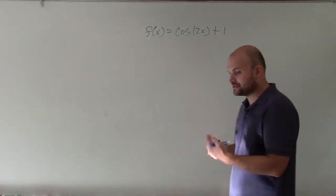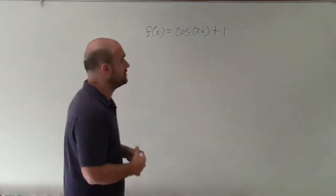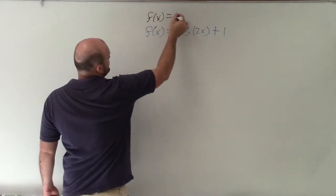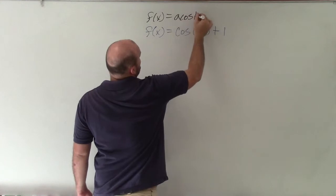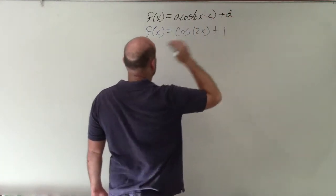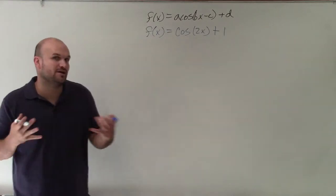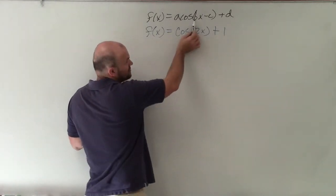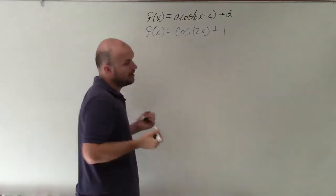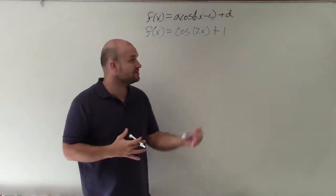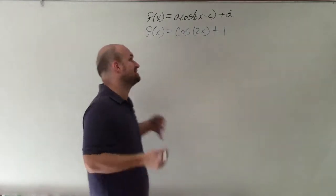The first thing we need to do is understand what exactly is changed with this function from our parent graph. So we write our transformation function, which is a times cosine of bx minus c plus d, where a, b, c, and d are all going to be our different transformations. We can see we have a coefficient of x, which would be our b, and we have a d, which would be a 1. When calculating for our characteristics of our function, we'll be able to see how these are going to affect them.